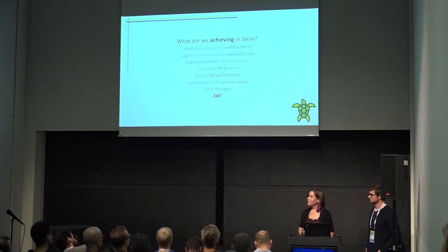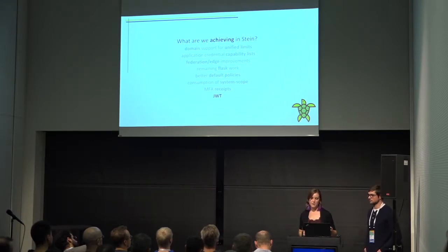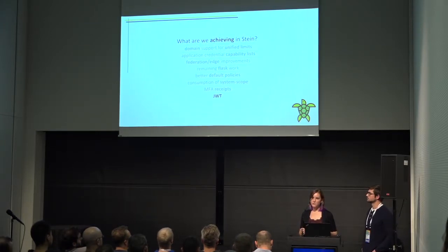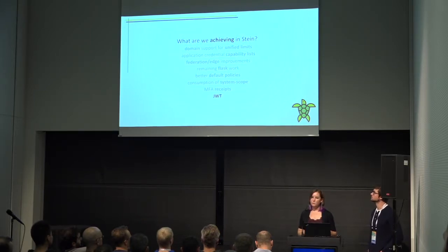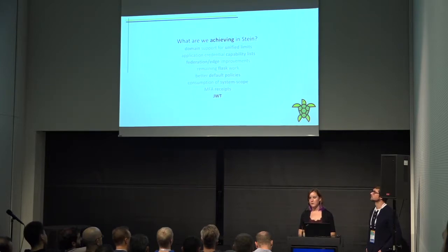Finally, we're going to implement JWT — JSON Web Tokens — as a new token provider alongside the existing Fernet token provider. We're doing that because JWT is a more globally known token standard. Services outside of OpenStack will be more able to understand and consume it, and it could help us down the line with improving multi-region and distributed Keystone setups because it has the ability to do asymmetric validation.